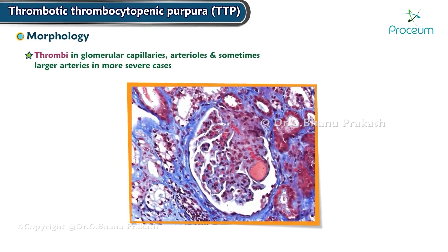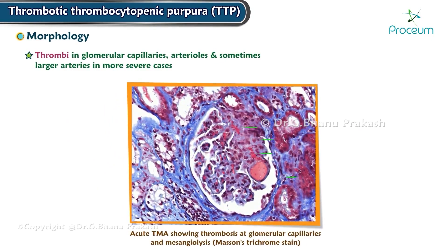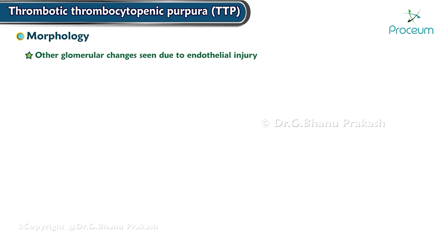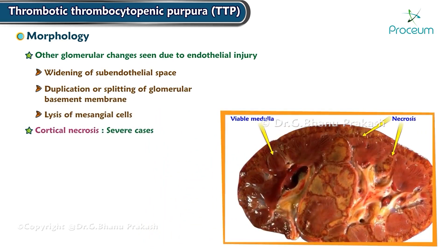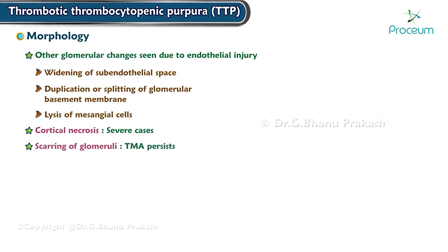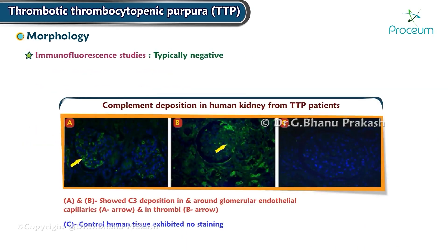Morphologically, thrombi in the glomerular capillaries are seen. The arterioles and sometimes the larger arteries also contain thrombi in more severe cases. Other glomerular changes due to endothelial injury include widening of the subendothelial space, duplication or splitting of the glomerular basement membranes, and lysis of the mesangial cells. Cortical necrosis is seen in severe cases, and scarring of the glomeruli occurs if thrombotic microangiopathy persists. Immunofluorescence studies are typically negative except for varying amounts of fibrinogen in the glomeruli and arterioles.